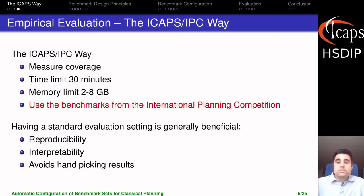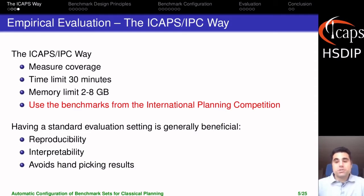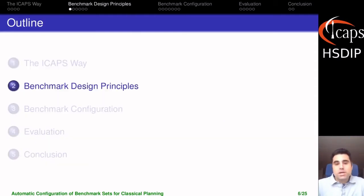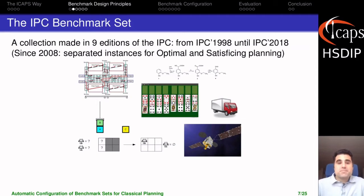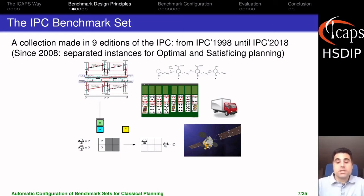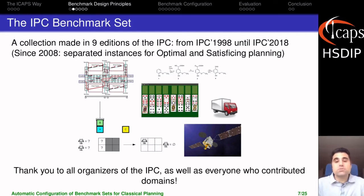However, in this talk I will focus on the benchmarks of the international planning competition and try to improve them so that we can do a better evaluation in our future papers. The IPC benchmark set has been created through different editions of the IPC since 1998 until 2018, and it has a very diverse set of domains, which is something very desirable to actually evaluate our planners in very different kinds of problems. I want to extend a thank you to everyone who contributed these domains, because this is really useful and we want to still use them.